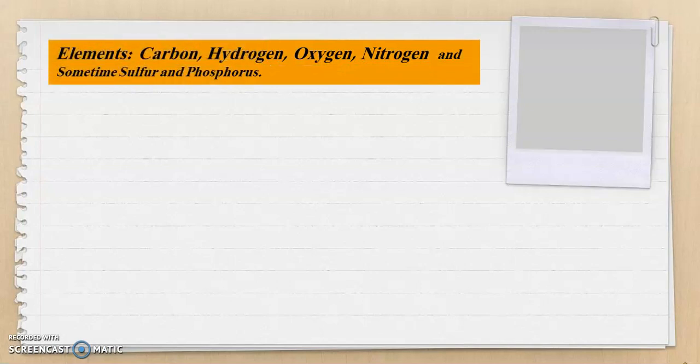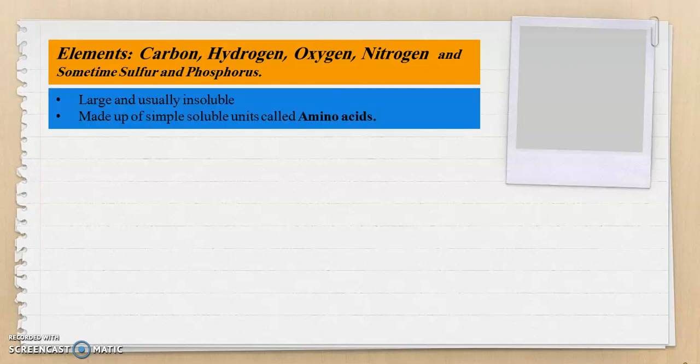Proteins also consist of carbon, hydrogen, and oxygen — the same three elements — but along with nitrogen, which is always present in all proteins. Sometimes sulfur and phosphorus may also be present. Proteins are large and usually insoluble, made up of smaller subunits called amino acids.